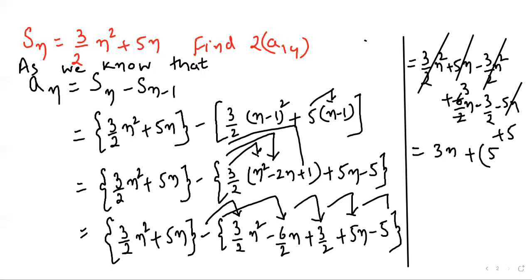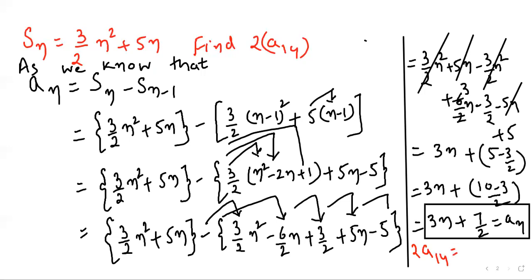We need to simplify, so this is 10 minus 3 by 2, so 10 minus 3 by 2 is 3n plus 7 by 2. This is called aₙ. We need to find 2 times a₁₄, simple.